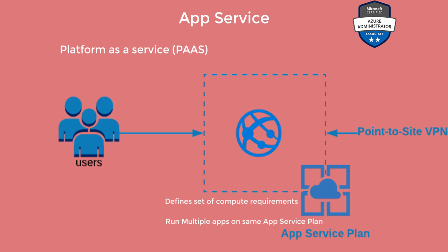When you create an app service plan in a certain region, you will be creating a set of compute resources in that particular region. You can then deploy applications — mobile apps or web applications — on that app service plan. An app service plan is confined to a region. It is essentially a virtual machine running behind the scenes for your application, but as a platform as a service, you won't have much control over it.